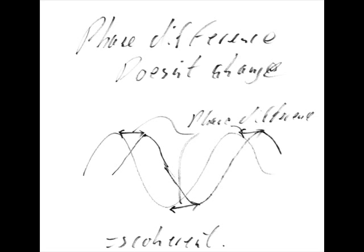If they have different frequencies, they can appear to have a phase relationship at one point in time, but not at another. For two waves to be coherent, the phase relationship between them must be constant. Let's take two waves and take a snapshot of them to compare them. The first wave peaks and the second wave troughs, so we can describe them as antiphase.